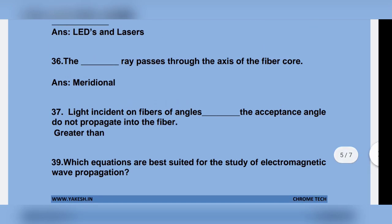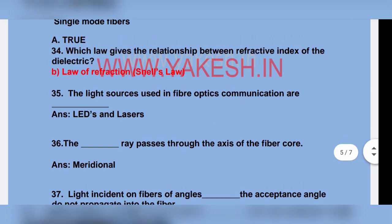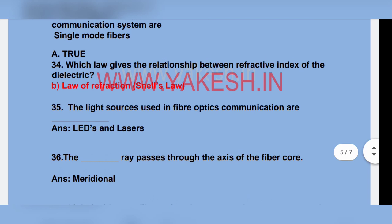Light incident on fiber at angles greater than the acceptance angle. The meridional ray passes through the axis of the fiber core.